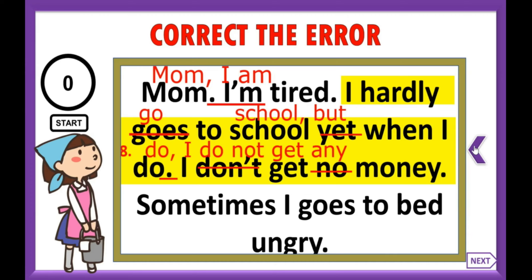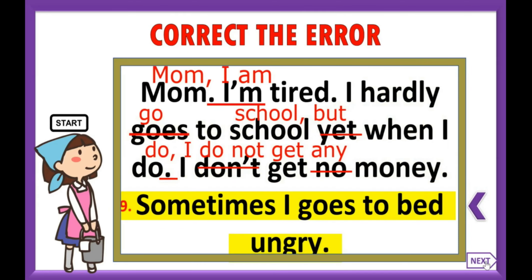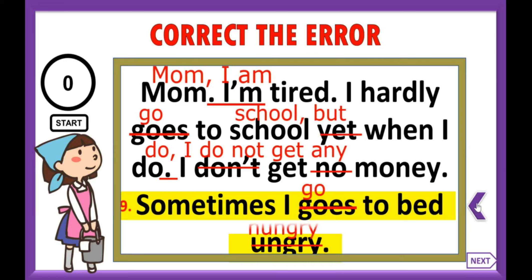Let's move to the final sentence: 'Sometimes I go to bed hungry.' The errors are 'goes' and 'hungry.' It should be 'go' — I go to bed. And 'hungry' is spelled H-U-N-G-R-Y. How well did you do? Did you get all sentences correct? Tell me in the comments.